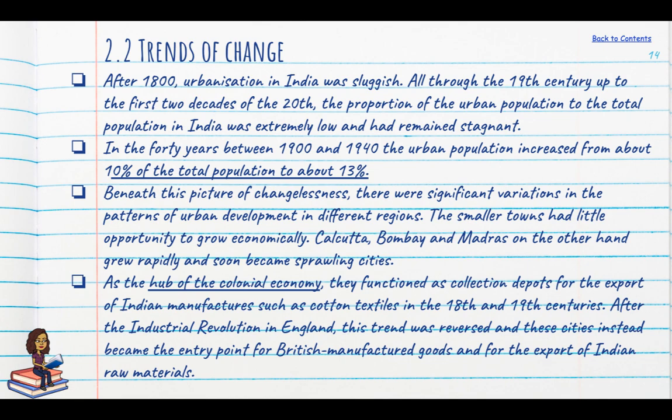From around the beginning of the 19th century we begin to see trends of change. Even though the overall number of people living in cities doesn't change much — only a rise from 10% to 13% between 1900 and 1940 — looking behind the figures reveals a lot of change. Earlier towns were rapidly in decline: Surat declined as Bombay rose, Masulipatnam declined with the establishment of Madras, and once Calcutta came up, both Dhaka and Murshidabad went into decline.